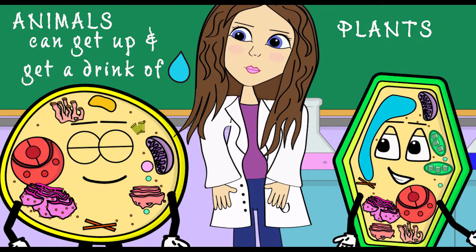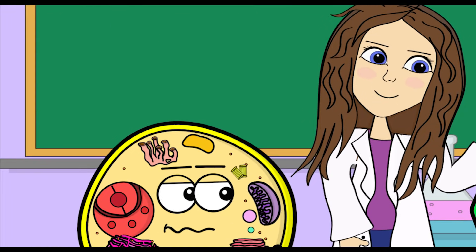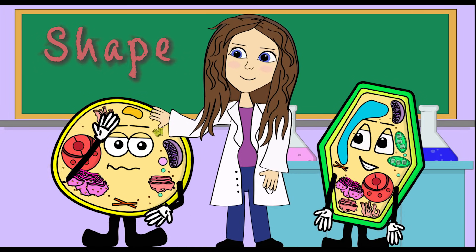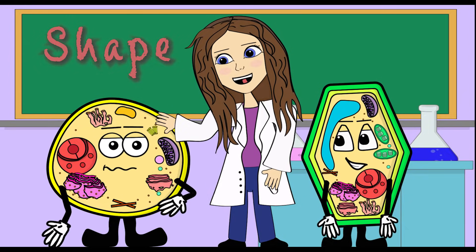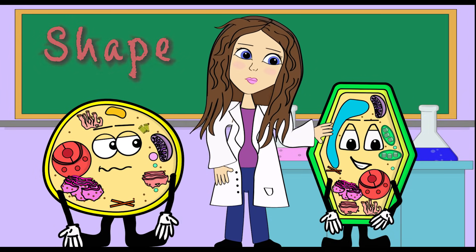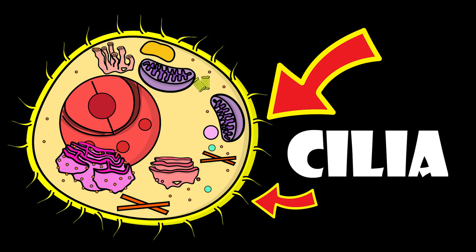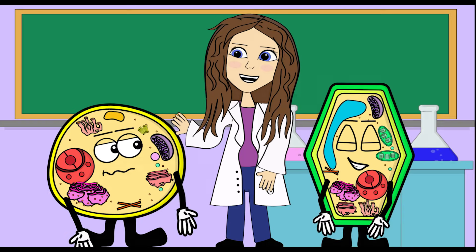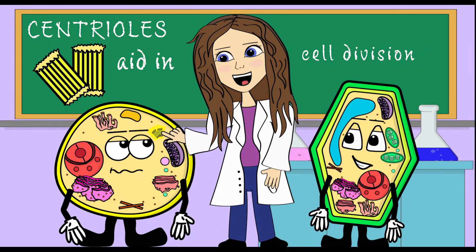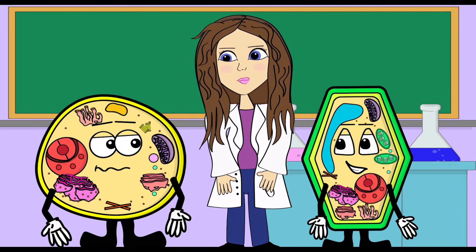Or I could just walk into the kitchen and get a glass of water with my legs! Some other differences: animal cells are mostly round and irregular in shape, while plant cells tend to have a fixed, somewhat rectangular or cube shape. Animal cells also tend to have cilia or flagella. Animal cells also contain structures called centrioles that aid in cell division — plant cells do not typically contain centrioles.